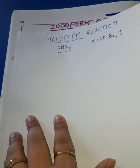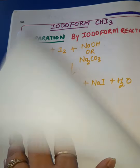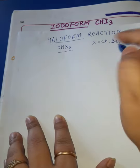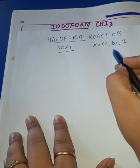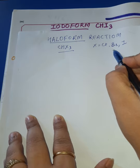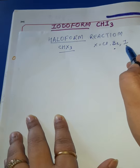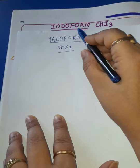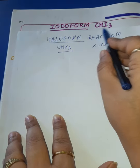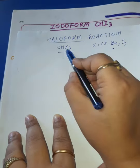If X is Cl, we call it Chloroform. If X is Br, we call it Bromoform. If X is I, we call it Iodoform — as written here, Iodoform is CHI3.